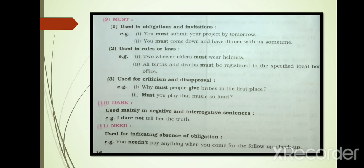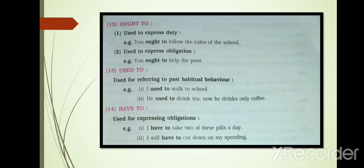Next modal auxiliary: Need. Used for indicating absence of obligation. For example: You need not pay anything when you come for the follow-up checkup. Ought to is used to express duty. For example: You ought to follow the rules of the school. Ought to also used to express obligation: You ought to help the poor.